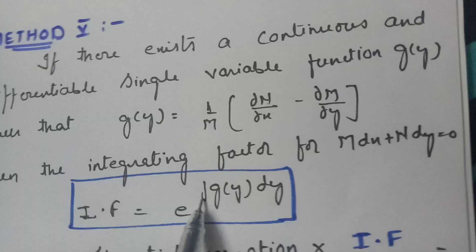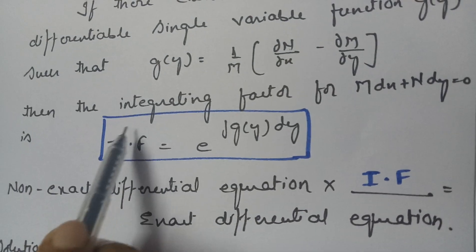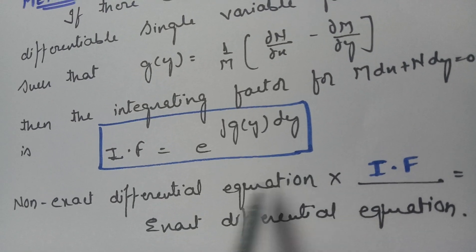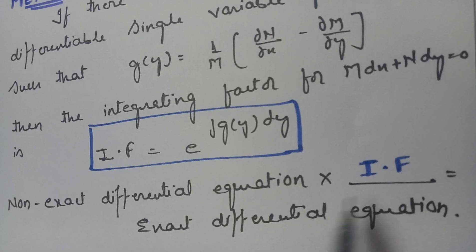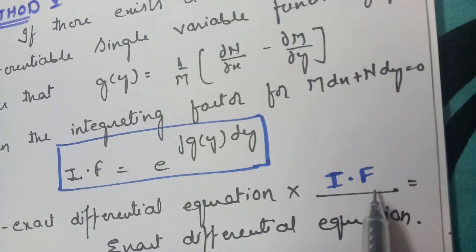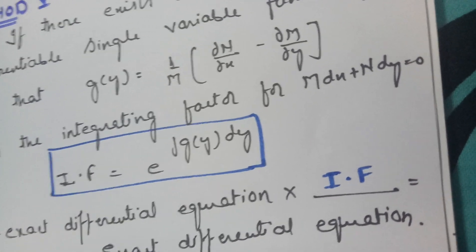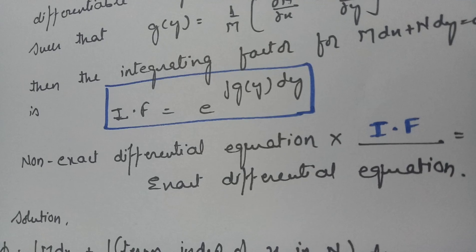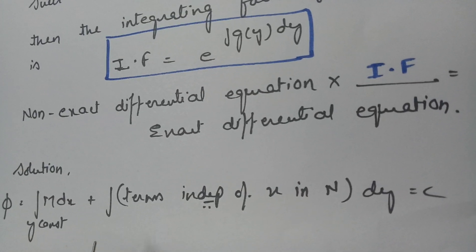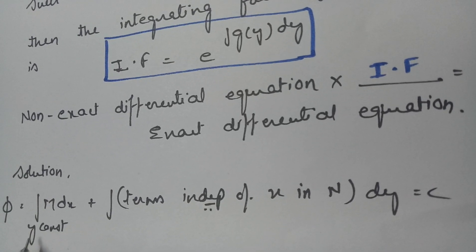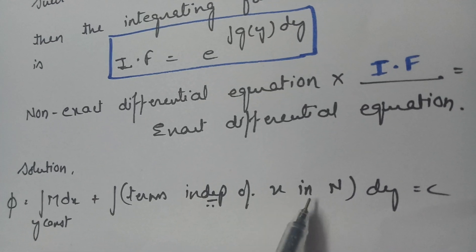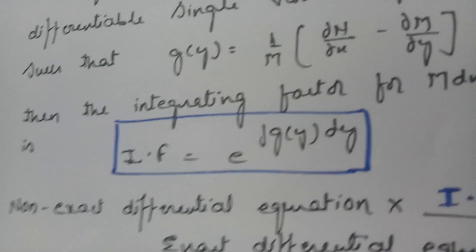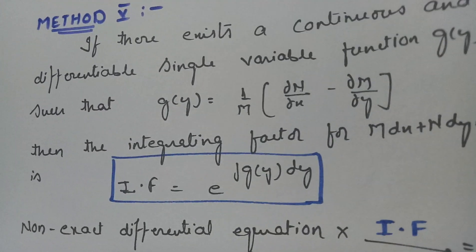The integrating factor is e to the power of integral G(y) dy. The purpose of the integrating factor is to convert a non-exact differential equation into an exact differential equation. Once it is exact, the solution formula is: φ = integral of M dx (keeping y constant) + terms independent of x in N, integrated with respect to y = C.